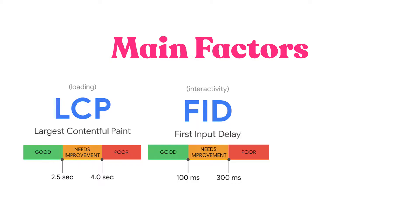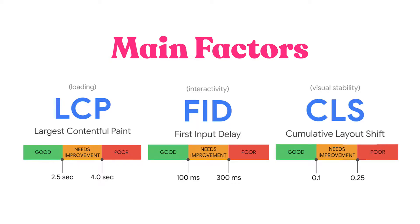Next, it looks at first input delay, which is a metric for interactivity, and 100 milliseconds is going to be your goal for the FID. And finally, cumulative layout shift measures visual stability, or how the user's experience with the layout of your site may unexpectedly change. Shoot for a metric of less than 0.1.